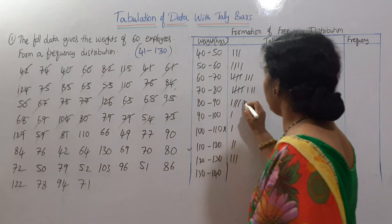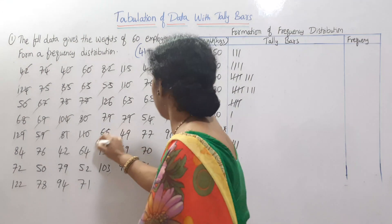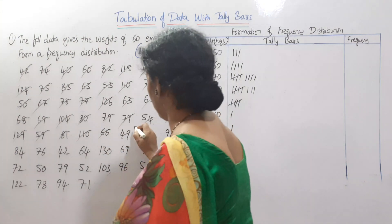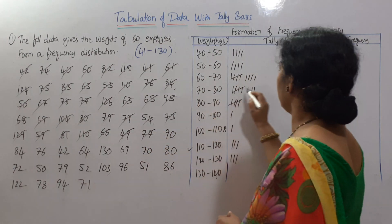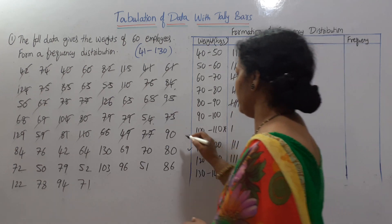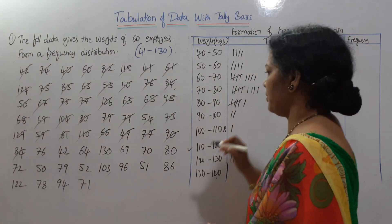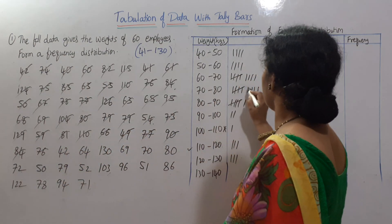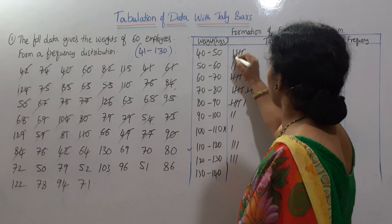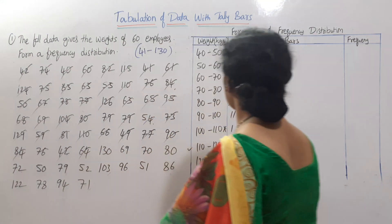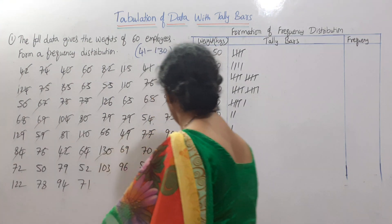81 falls in 80 to 90. 110 falls in 110 to 120. 66 falls in 60 to 70. 49 falls in 40 to 50. 77 falls in 70 to 80. 90 falls in 90 to 100. 84 falls in 80 to 90. 76 falls in 70 to 80. 42 falls in 40 to 50. 64 falls in 60 to 70. 130 falls in 130 to 140.